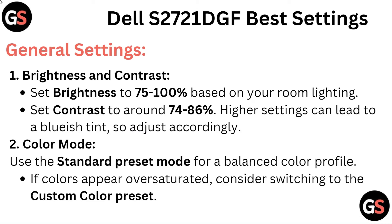Brightness and Contrast: Set brightness to 75-100% based on your room lighting. Set contrast to around 74-86%. Higher settings can lead to a bluish tint, so adjust accordingly. For Color Mode, use the standard preset mode for a balanced color profile.